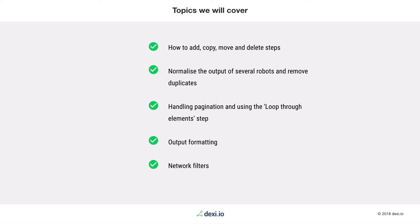Today specifically it's how to build your first robot. You'll learn how to add, copy, move and delete steps, how to normalize the output of several robots, remove duplication, handle pagination, use the loop through elements feature, and look at output formatting. If you have questions, please type them into the chat and we'll cover them in a Q&A session at the end of the webinar.